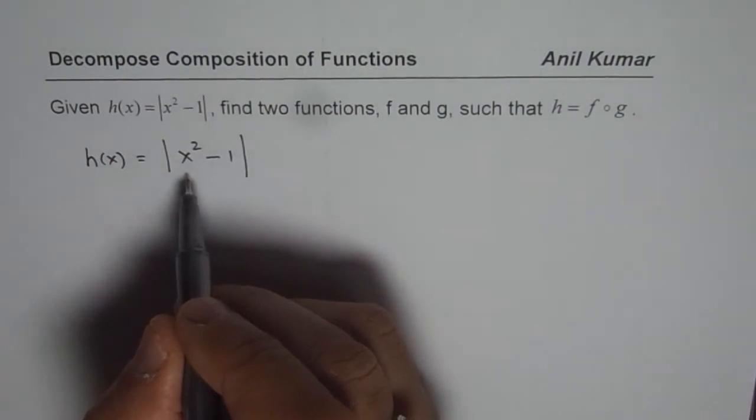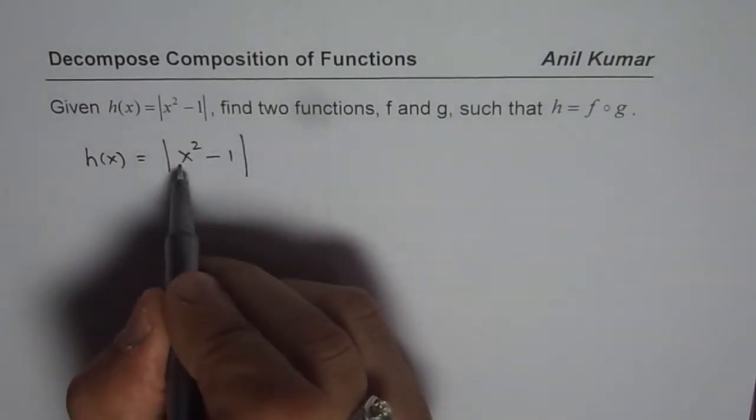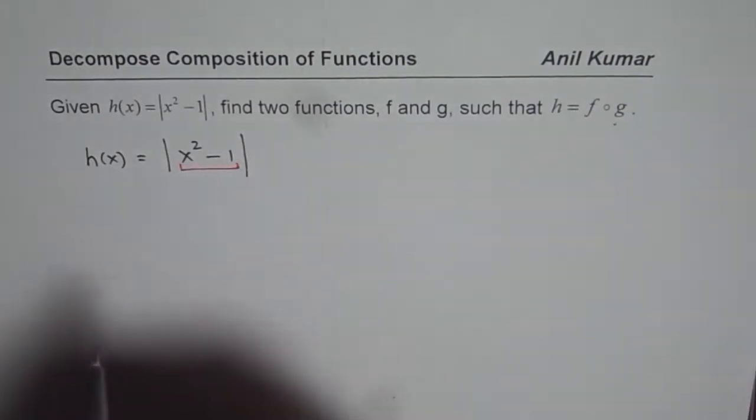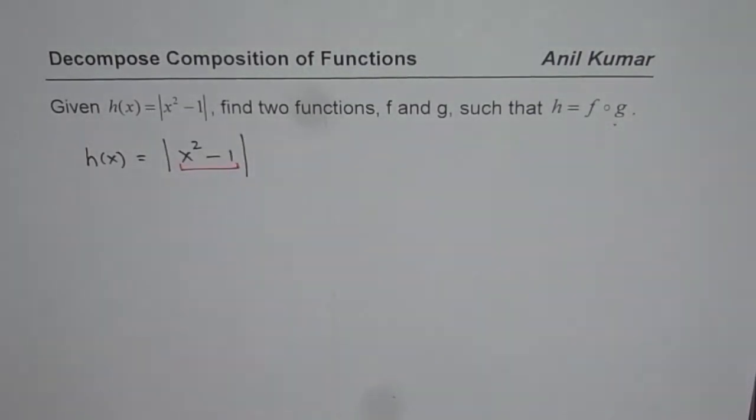One, we can consider the inside function as x square minus 1. So that becomes g and outside function as absolute x. So that could be one option.